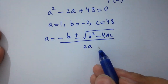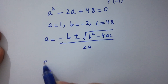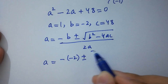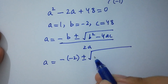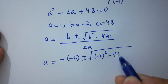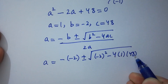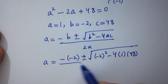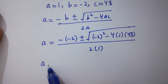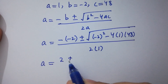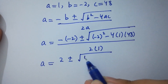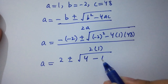Put the values of a, b, and c. We have: a equals minus (minus 2) plus or minus square root of (minus 2) squared minus 4 times 1 times 48, over 2 times 1. This gives 2 plus or minus square root of 4 minus 192 over 2.